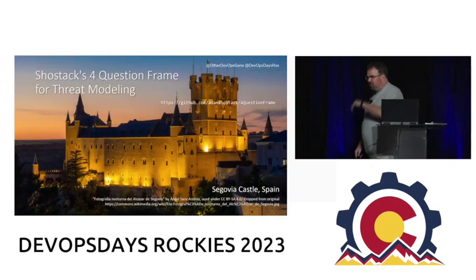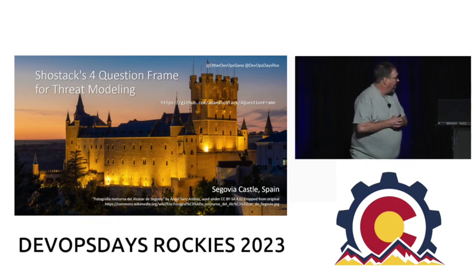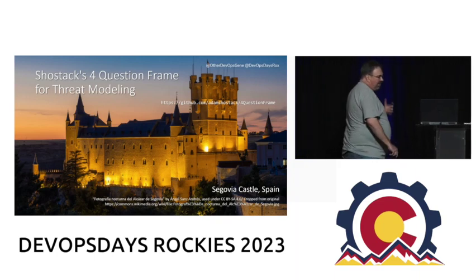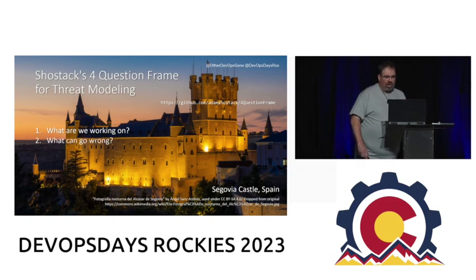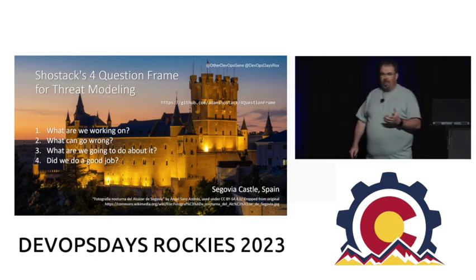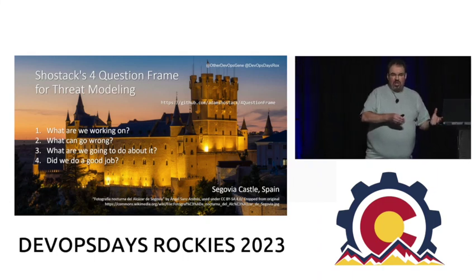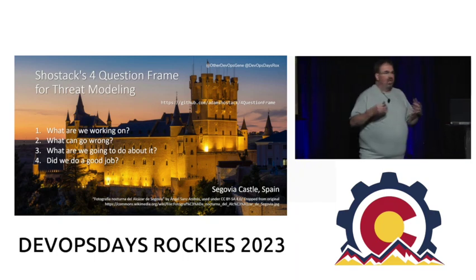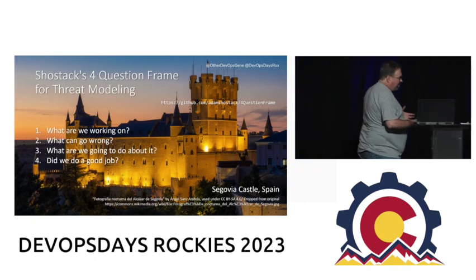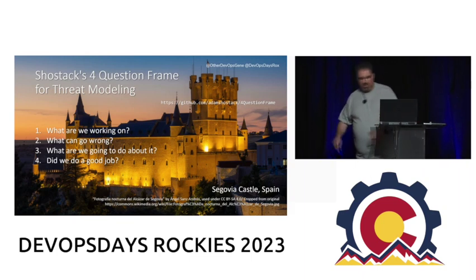Adam Shostack - I'll show his book later - writes a lot on threat modeling and teaches a ton of threat modeling courses. He phrases it as the four-question frame for threat modeling: What are we working on? What can go wrong? What are we going to do about it? And did we do a good job? If you think about it, this is a lot like a lot of things we do in software development where we have a feedback loop - we consider what we're going to do, consider the failure cases, figure out how to address those, and then use feedback to see did we do enough, do we need to do more, did we invest too much.